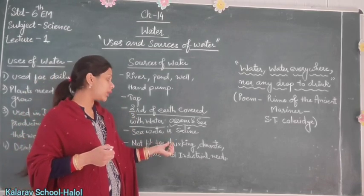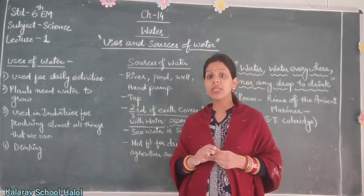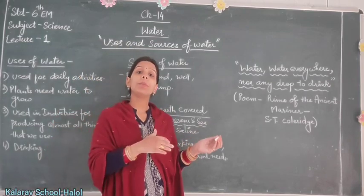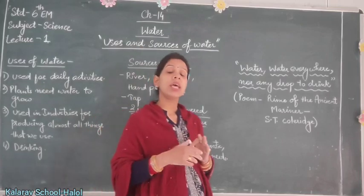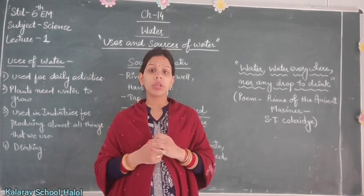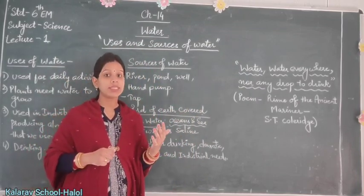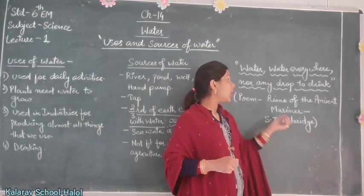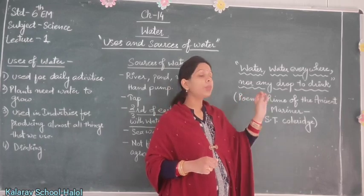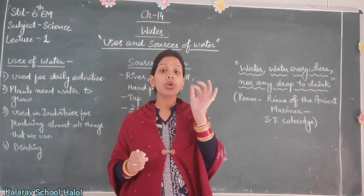Sea water is not fit for drinking, domestic, agricultural, or industrial needs. So how do we get water in our homes that is not saline? People living away from seashores receive water that is not salty and is fit for drinking. A famous poet wrote in his poem — 'Water, water everywhere, nor any drop to drink.' This line captures the paradox that two-thirds of the earth is covered with oceans and seas, yet we cannot use that water directly.